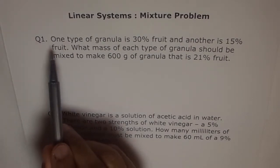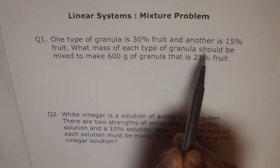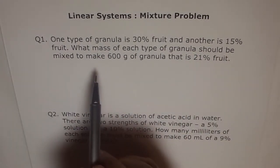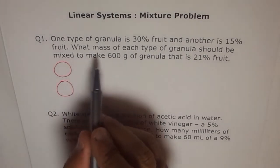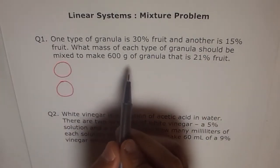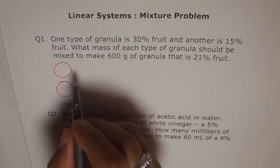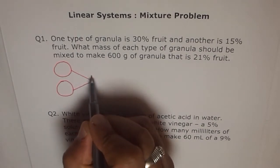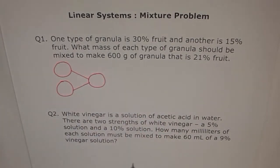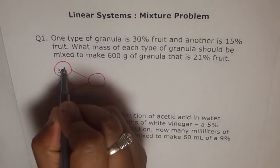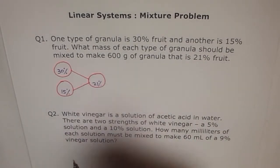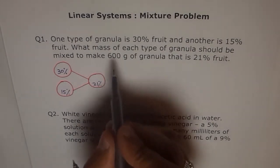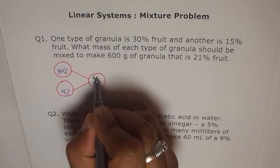Now let's read it slowly. One type of granula is 30% fruit and another is 15% fruit. So we got two types of granula. We can draw like this: we have one type here and another type here. What mass of each type of granula should be mixed to make 600 grams of granula that is 21% fruit? So we want to mix these and get a third type. That's the kind of problem which we have. And here what do we have? We have a 30% granula, so this is 30%, and this one is 15%. And what do we want? We want 21%. Now the third thing is, how much do we want? We want 600 grams.